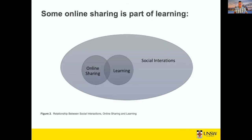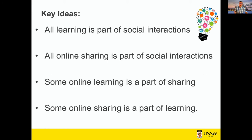Here's my model in the online form. I've situated online sharing as a social process or social interaction, and online learning also as a social beast, and the two — online sharing and online learning — disks overlap. The key ideas are that all learning is part of social interactions, online sharing is part of social interactions, some online sharing is part of learning and some online learning is part of sharing. That's the theory, backed up with the secondary data analysis from the New York Times.